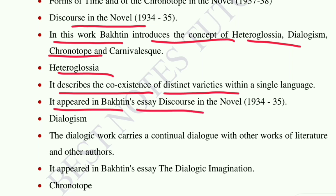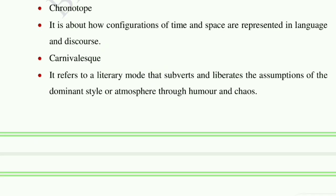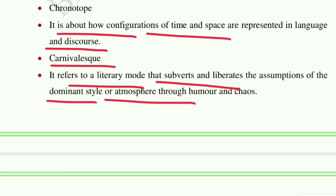Published 1934–1935. In this work, Bakhtin introduces the concepts of heteroglossia, dialogism, chronotope, and carnivalesque. Heteroglossia is the coexistence of distinct varieties within a single language; it appeared in Bakhtin's essay 'Discourse in the Novel' published 1934–1935. Dialogism: the dialogic work carries a continual dialogue with other works of literature and other authors. Chronotope is about how configurations of time and space are represented in language and discourse. Carnivalesque is a literary mode that subverts and liberates the assumptions of the dominant style through humor and chaos.